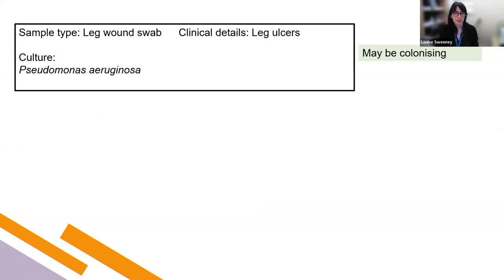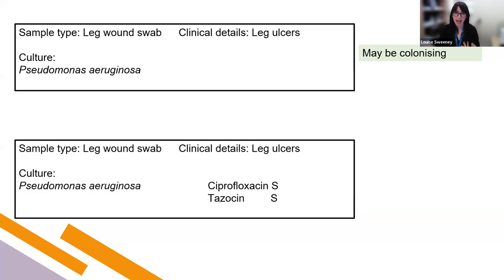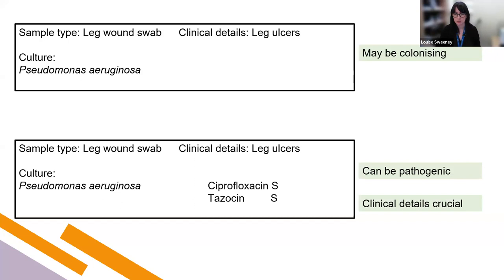Still on wound swabs — Pseudomonas aeruginosa in the context of leg ulcers. This may be a colonizer or may be clinically significant. I have to base my interpretation on the information given, looking back at past culture results, whether the patient is in hospital, whether they're on antibiotics. If this is the first time we've isolated it from someone at home who's otherwise reasonably well, I wouldn't provide any susceptibility results, but would provide a comment and say to call me if there are any concerns. However, if the patient is in hospital and very unwell, with prior antibiotic treatment, or is diabetic, this may be more significant, and I will release the relevant susceptibility results.